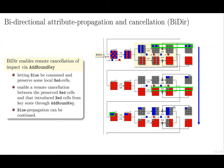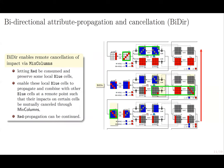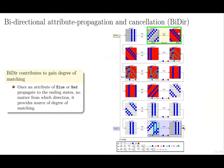The next point is allowing bidirectional attribute propagation and cancellation. It lets the attribute be consumed and preserve the opposite propagation, but it ultimately benefits the original propagation because it might enable remote cancellation of impact via the MixColumns operation. Besides, it contributes to gaining a higher degree of matching.